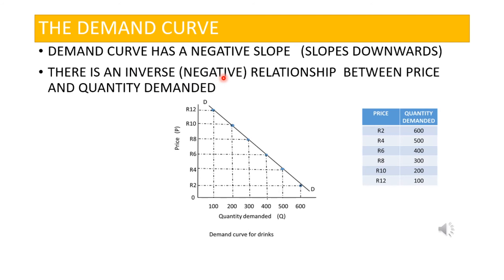There is also an inverse, or negative, relationship between the price of a product and the quantity demanded. This simply means that when the price is high — for example at 12 rand — fewer drinks were demanded. But when the price is low, the quantity demanded is high. That is the inverse relationship.